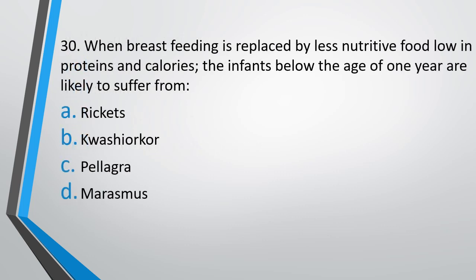Question number 30. When breastfeeding is replaced by less nutritive food, low in protein and calories, the infant below the age of 1 year is likely to suffer from: rickets, kwashiorkor, pellagra, or marasmus? The correct answer is option B, kwashiorkor.